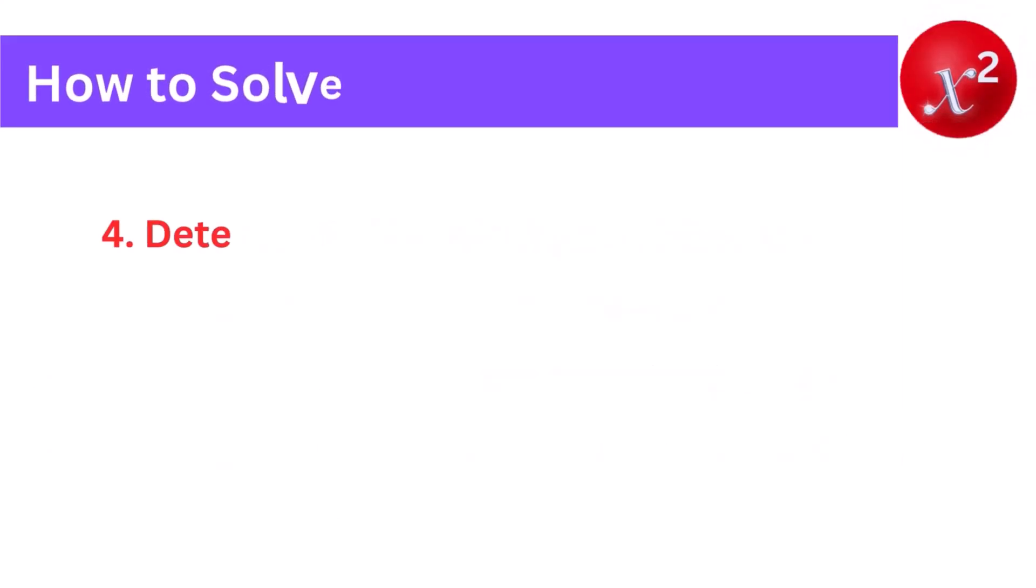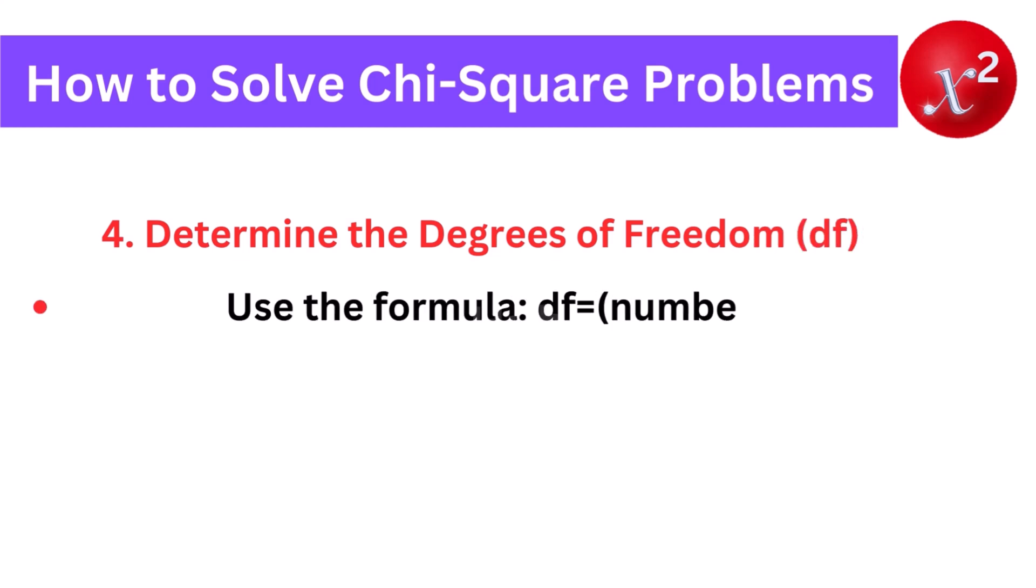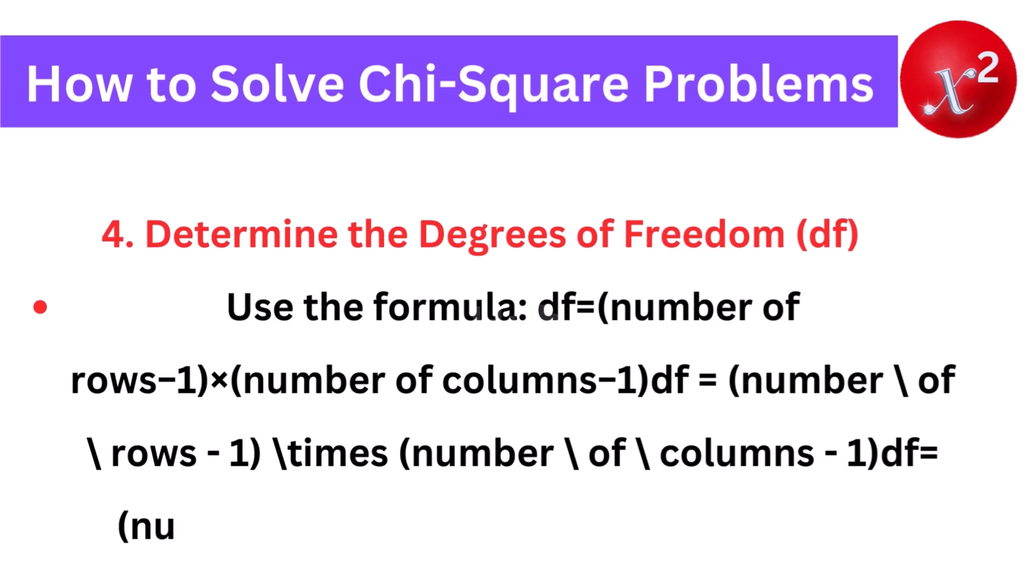4. Determine the degrees of freedom, Df. Use the formula: Df equals (number of rows minus 1) times (number of columns minus 1).